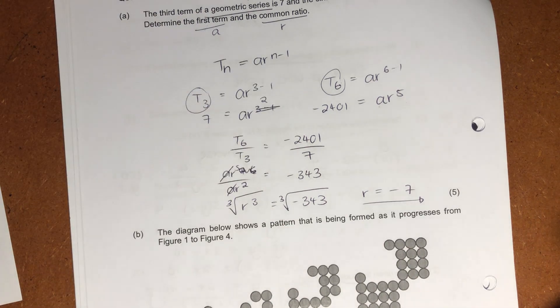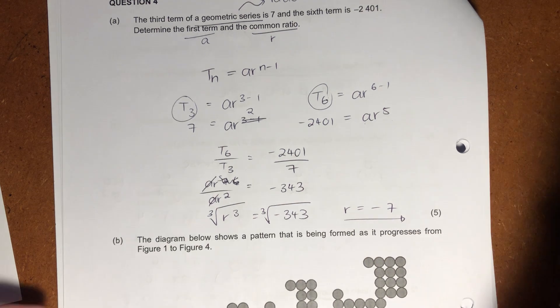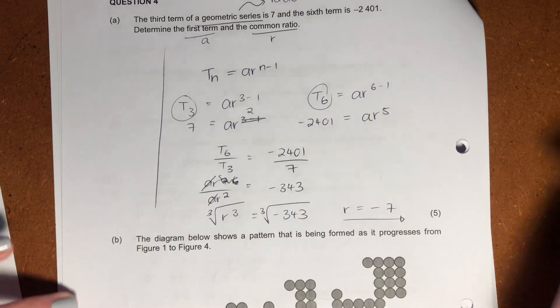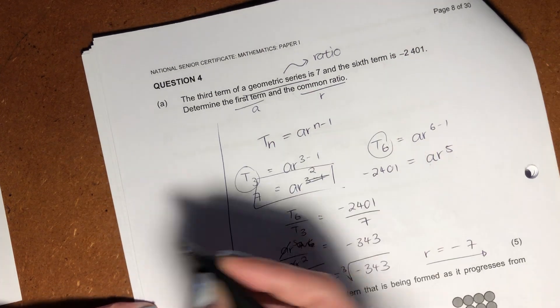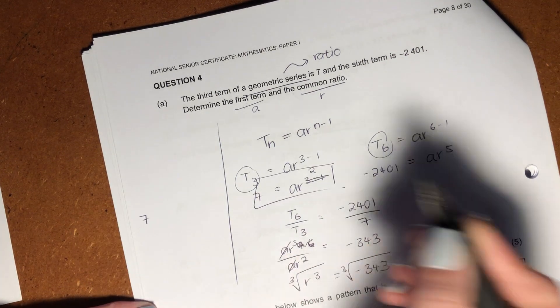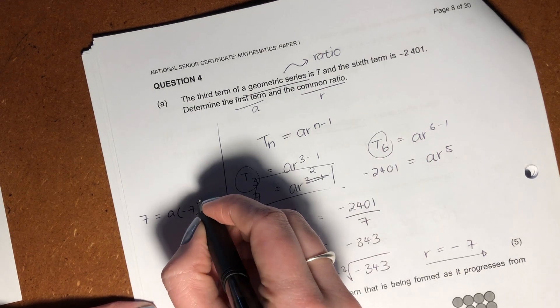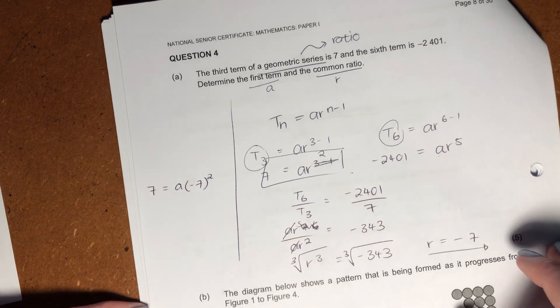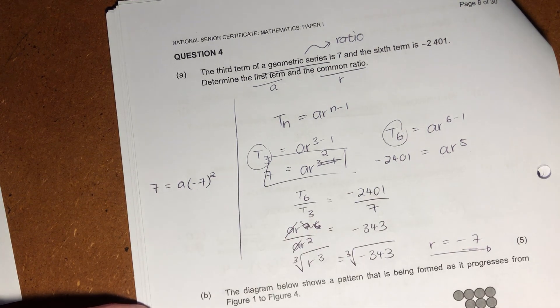So we know that my ratio equals negative 7. Perfect. So now we've got one of the things we needed to get. My use of space has not been particularly good, but I will do it over here. Okay, so now we have our ratio. No problem. Let's go and sub it back into here.